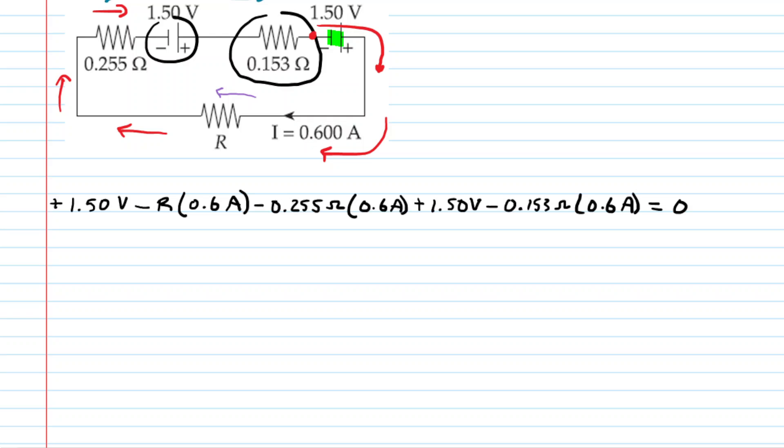Now we're going to solve for R. And perhaps we can do that by picking up our calculator and simplifying all of these values here. When we do that, we get 1.2552 volts. We'll fill in the rest of the equation.